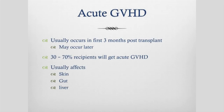Acute graft versus host disease usually occurs in the first three months after the transplant. Occasionally and in certain circumstances it may occur later, but it's most commonly seen in that first three months. Around 30 to 70 percent of recipients will get some form of acute graft versus host disease. The organ systems that acute GVHD usually affects are the skin, the gut, and the liver.